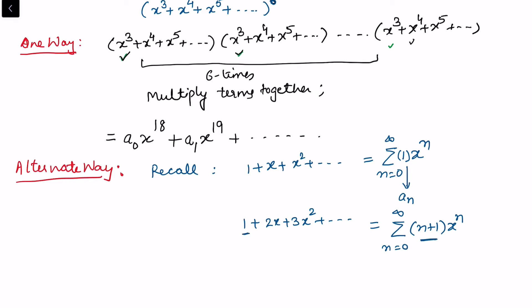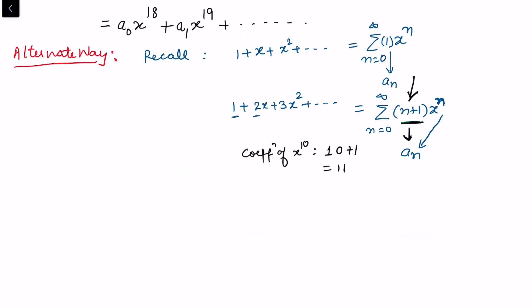Similarly, if we have 1 + 2x + 3x² + ..., we can write it as the summation of (n+1)xⁿ for n from 0 to infinity. When n = 0 the first term is 1, and when n = 1 the coefficient of x is 2. So the coefficient of xⁿ is (n+1). If asked for the coefficient of x¹⁰, I plug in n = 10 to get 10 + 1 = 11.